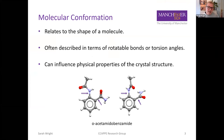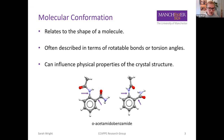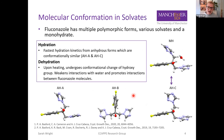Molecular conformation describes the shape of a molecule and is often described in terms of rotatable bonds or torsion angles, which can also influence the physical properties of the crystal structure. Here I have the example of ortho-acetamide benzamide, and you can see differences around these two rotatable bonds.